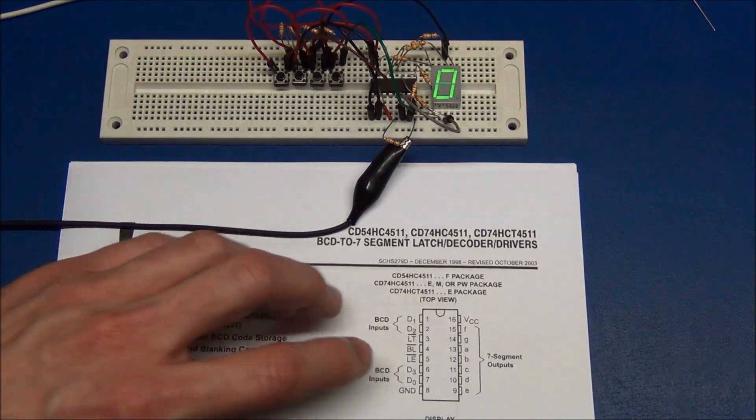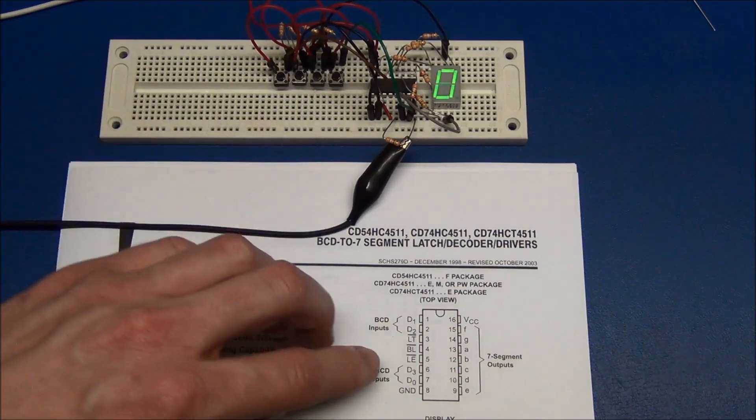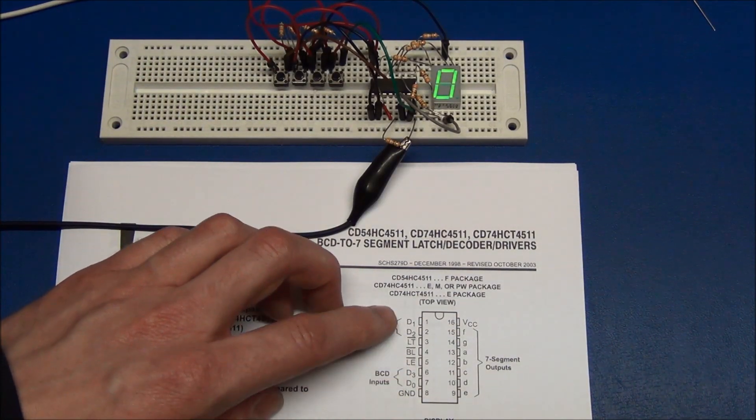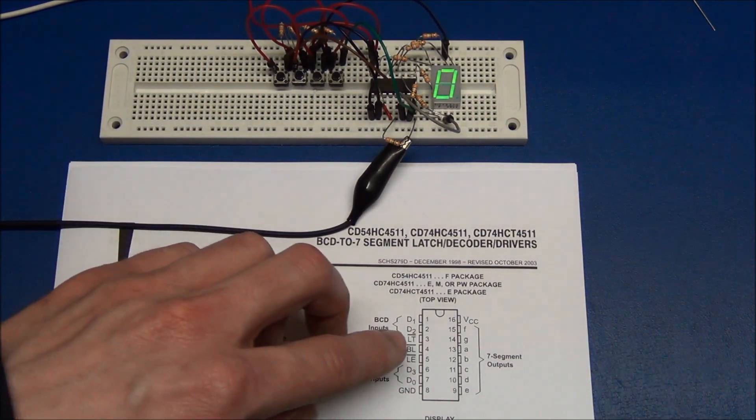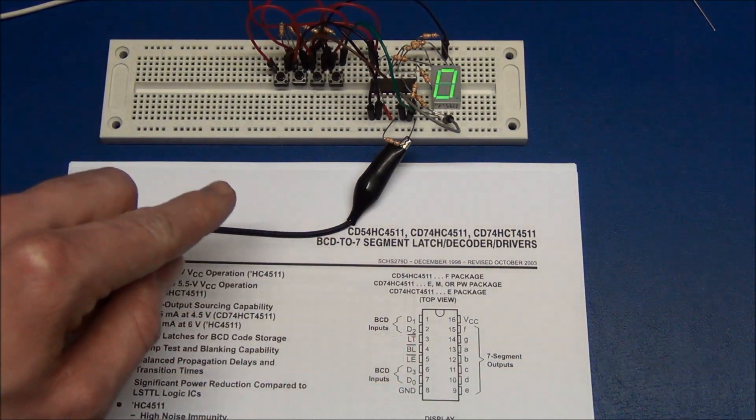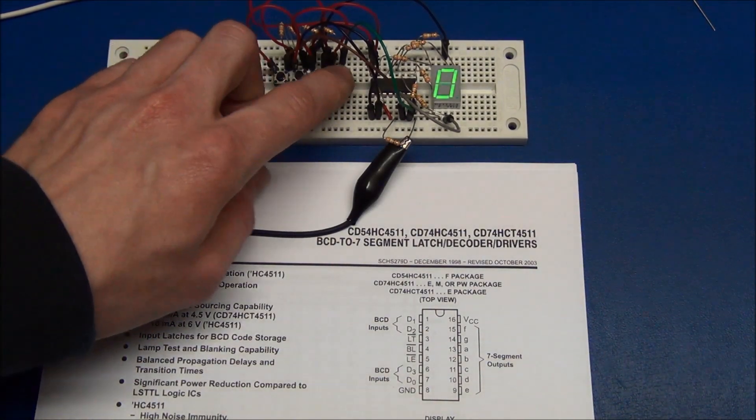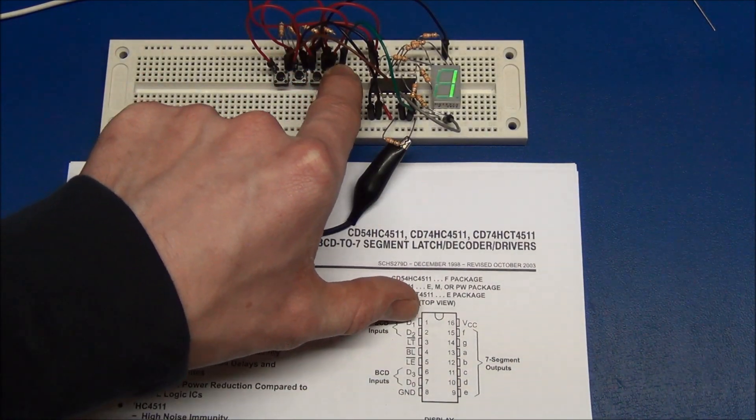Each of the four digital inputs I have connected to a button. And I have also connected a pull down resistor to each of the digital inputs, so that it will be held to ground unless a button is pressed. On the other side of the switch I have connected 5 volts, so if we press a button, it will send 5 volts through the switch and into that input.